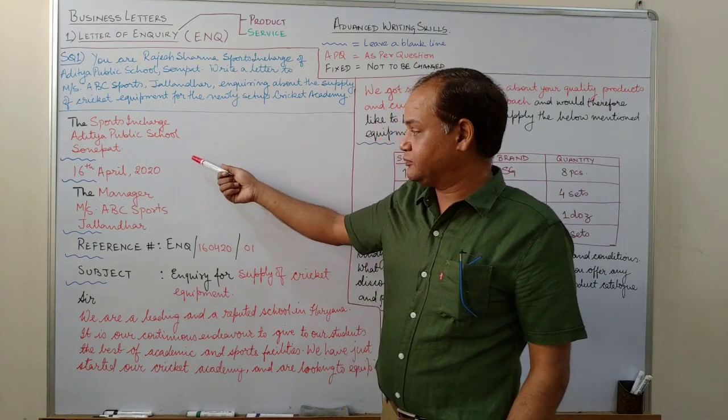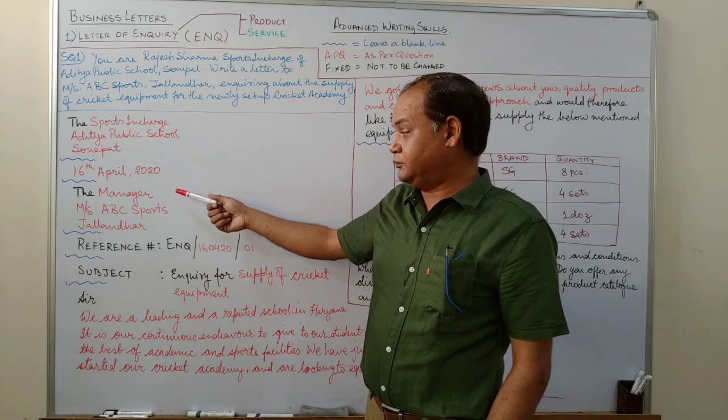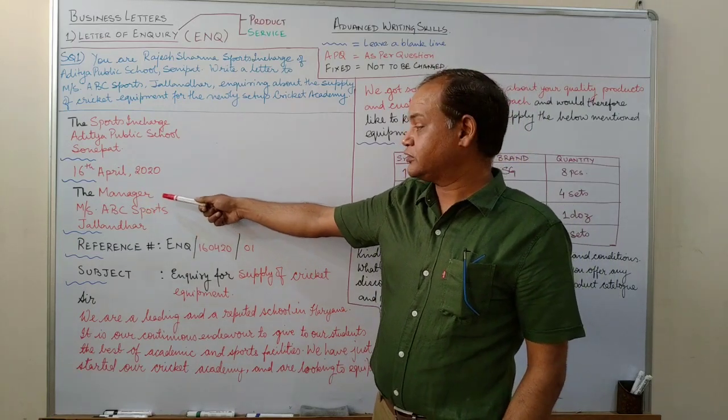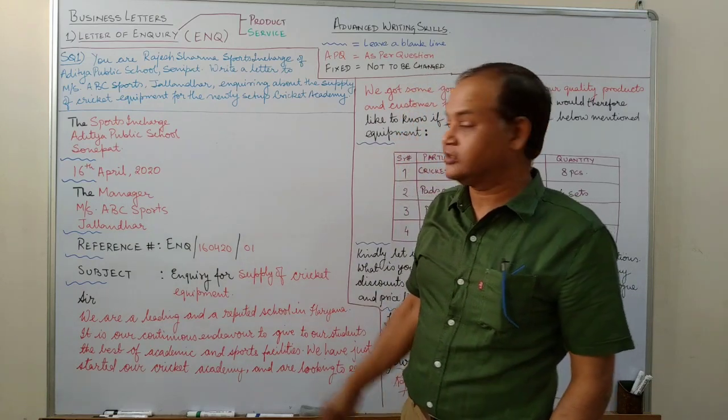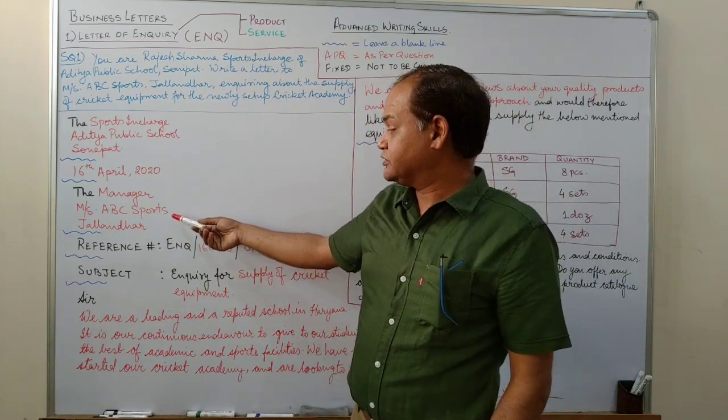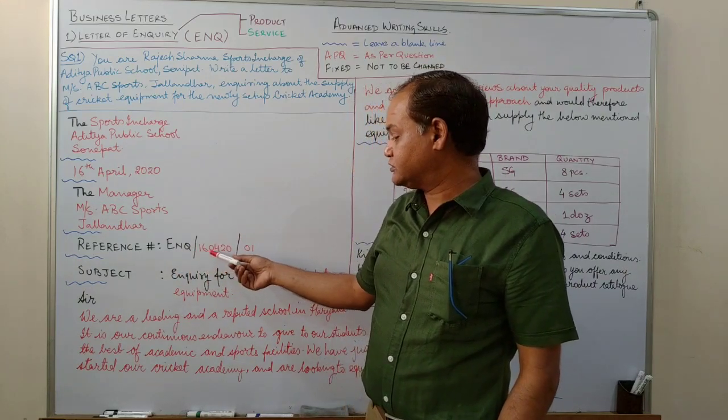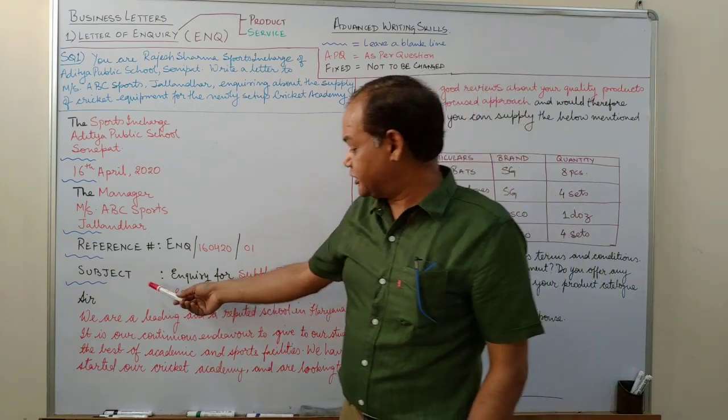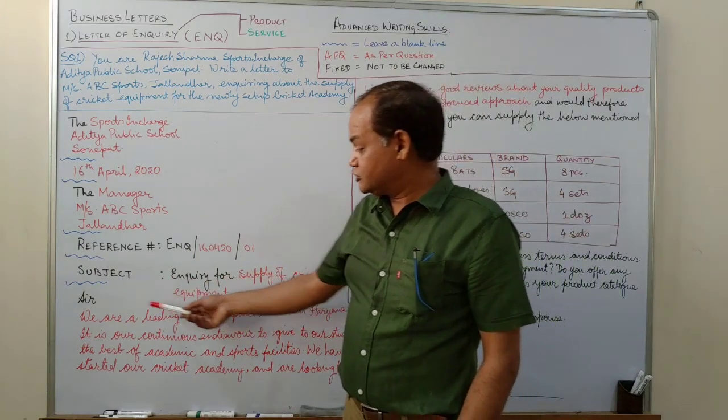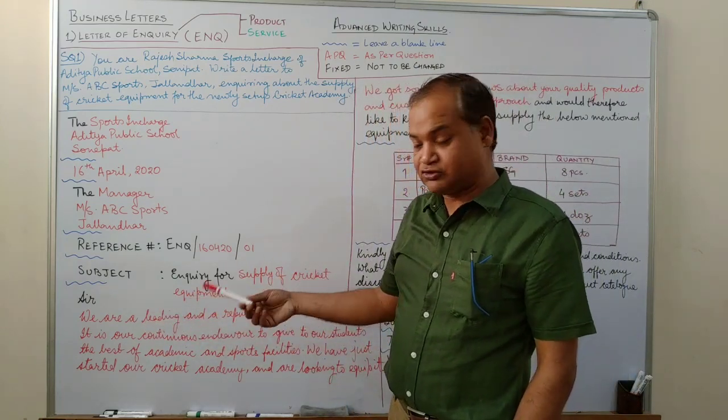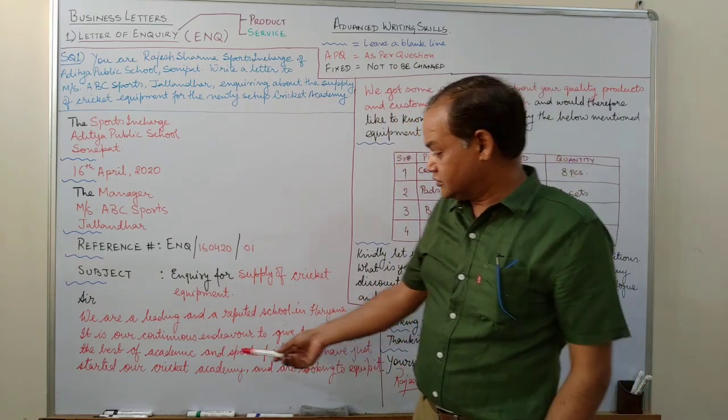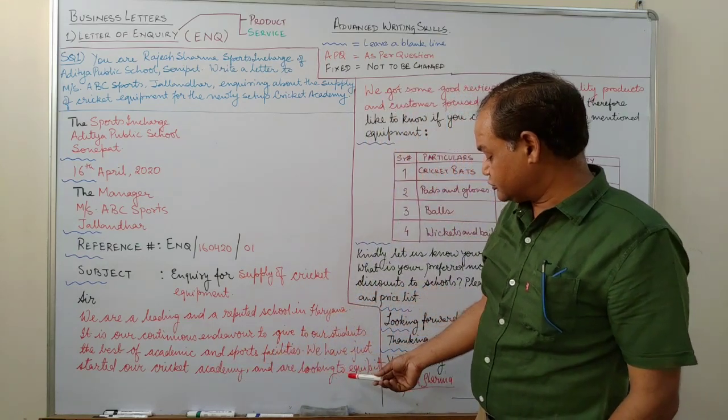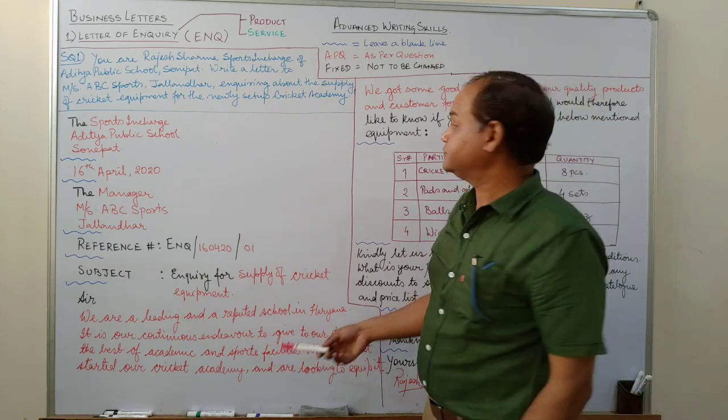So it says, the sports in charge, Aditya Public School, Somipata, 16th April 2020. The manager. Now, this has to be added because you cannot write to a shop. A shop is not a person. Sir, you have to write to somebody in that shop. So if the designation of the receiver is not given, you simply write, the manager. Messrs ABC Sports Jalandhar, reference number ENQ 160420, 160420. So that's it. And letter number 101. Subject, enquiry for supply of cricket equipment. Sir, we are a leading and a reputed school in Haryana. Introduce yourself. It is our continuous endeavor to give to our students the best of academic and sports facilities. We have just started our cricket academy and are looking to equip it.